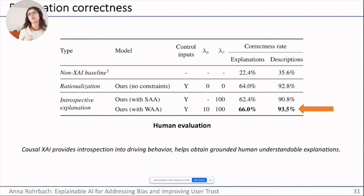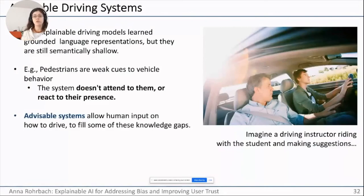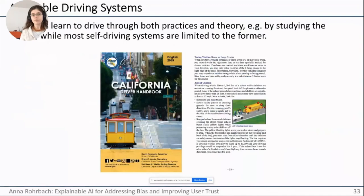Looking more closely at the descriptions and explanations, we note they may not be as detailed as we would like — they are somewhat shallow in their ability to refer to nuanced evidence or to mention things like pedestrians. We find it particularly concerning that pedestrians are rarely mentioned and rarely attended to. This brings us to the second part of this line of work: advisable systems, where we believe human advice can improve the system by guiding it toward what matters to the human user.